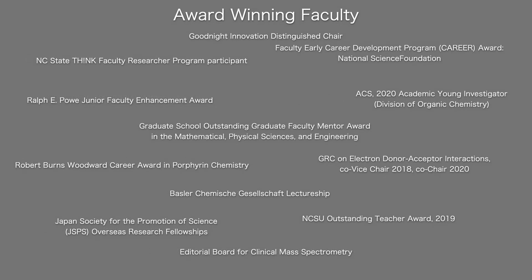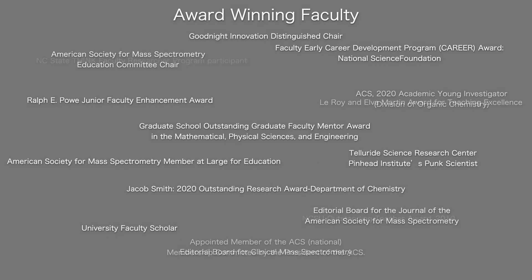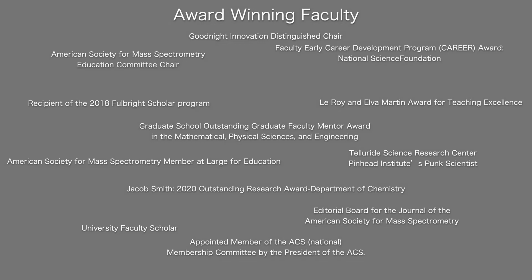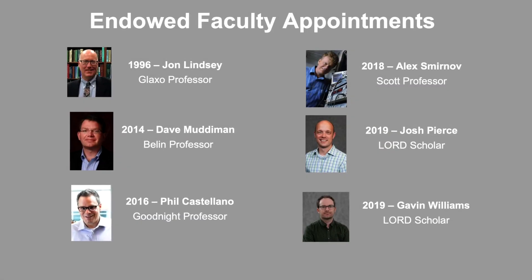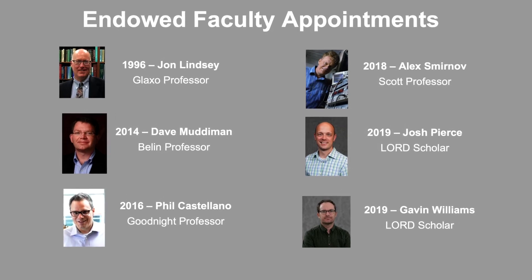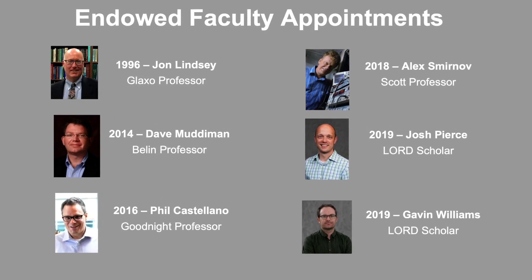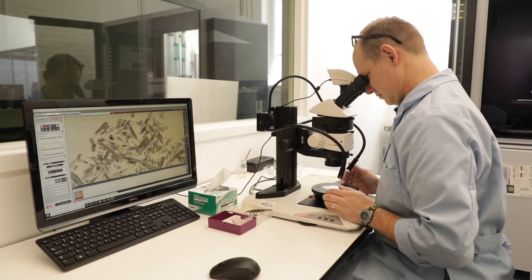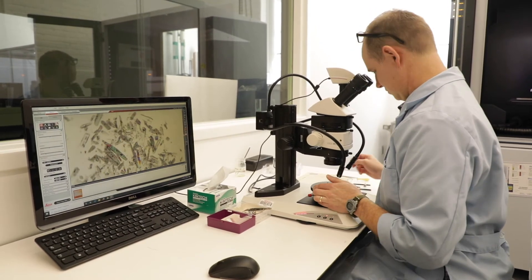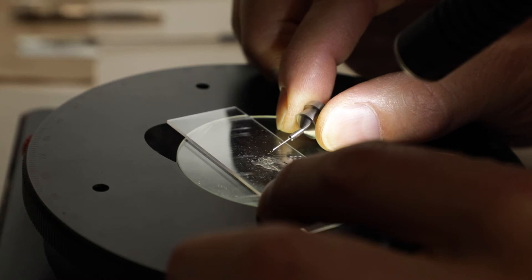The department has also been awarded close to eight million dollars in research funds over the last year and has published about 200 peer-reviewed publications during this time. That amounts to about 7,000 citations. We also have six endowed professorships in the department. Because those positions are financed by external donors, it really speaks volumes to the impact that research in the NC State Chemistry Department has on the university and society.